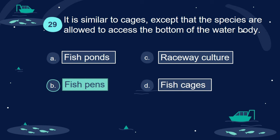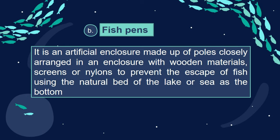Answer: B. Fish pens. It is an artificial enclosure made up of poles closely arranged in an enclosure with wooden materials, screens, or nylons to prevent the escape of fish, using the natural bed of the lake or sea as the bottom.